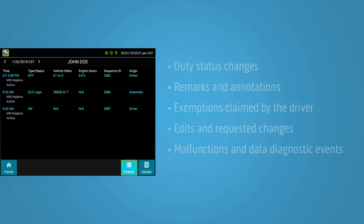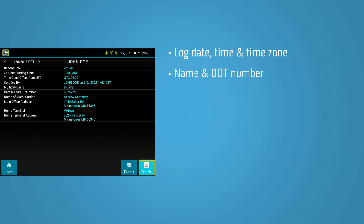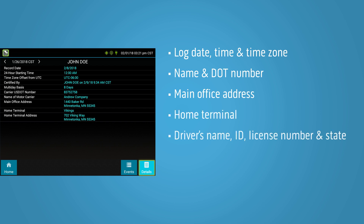The user can also click on the details icon in the lower right-hand corner to see specific log details, including log date, time, time zone, name, DOT number, main office address, home terminal, driver's name, ID, license number and state, co-drivers, and ELD provider.